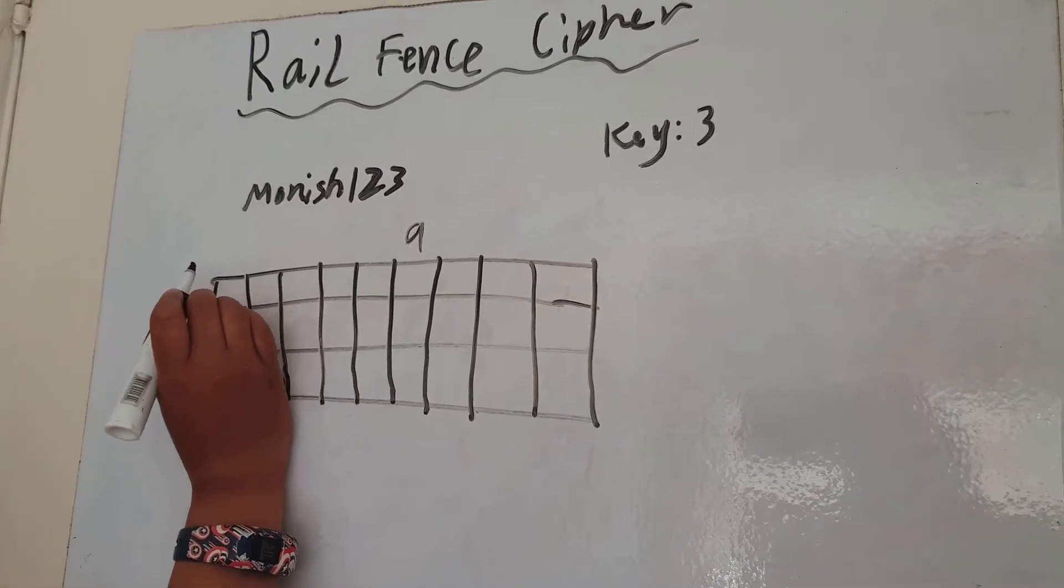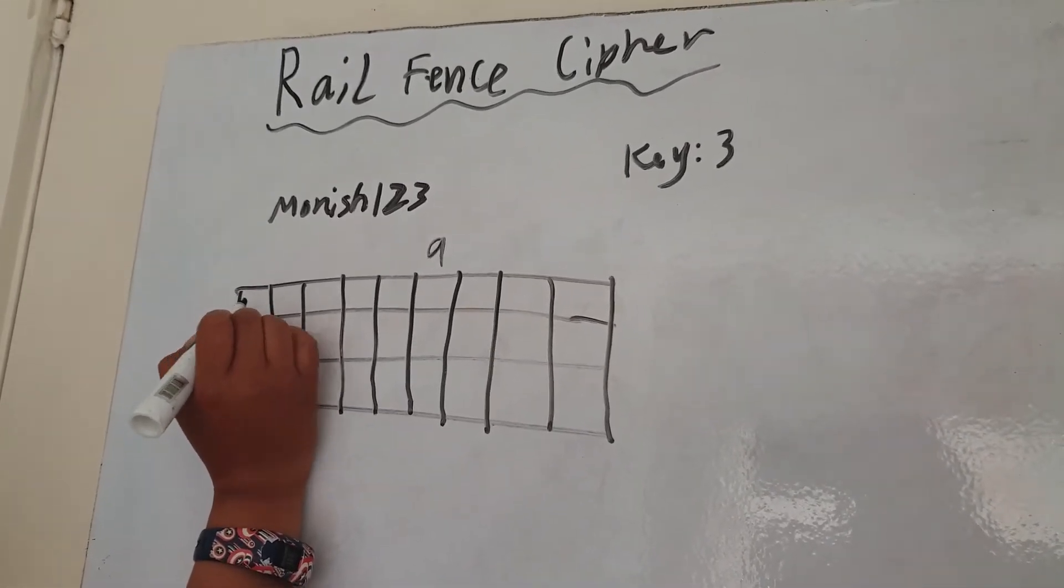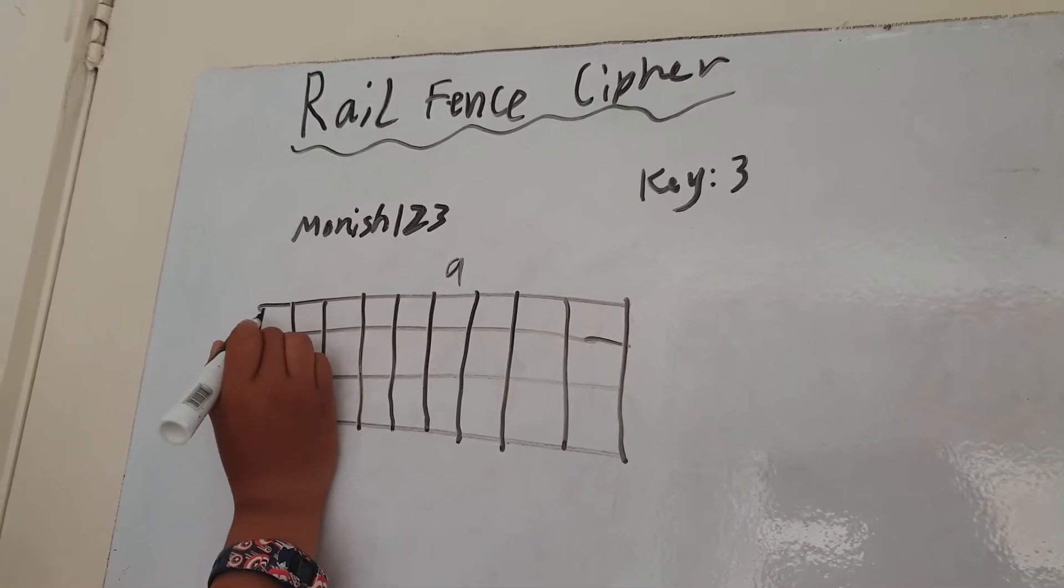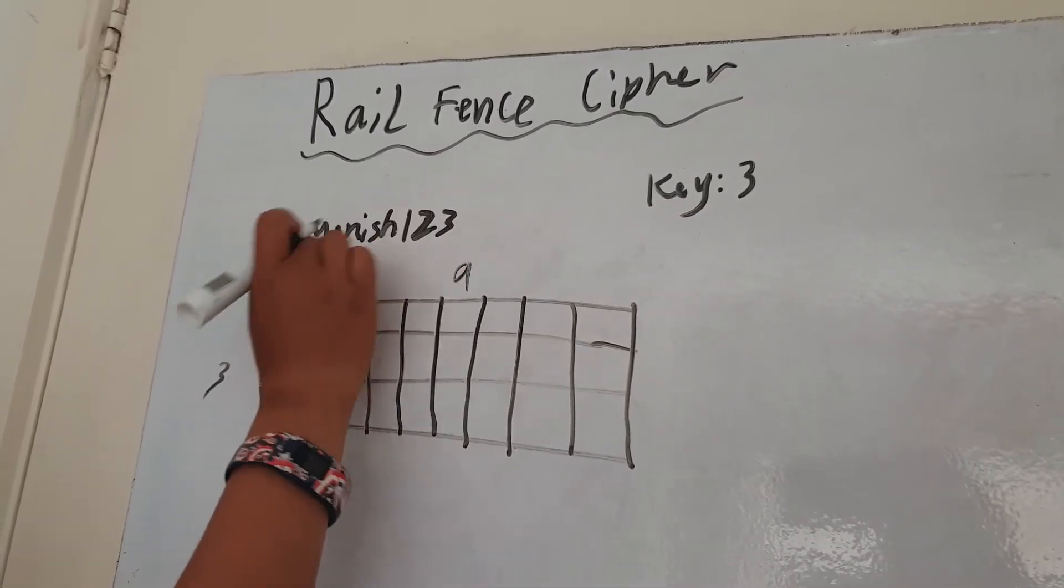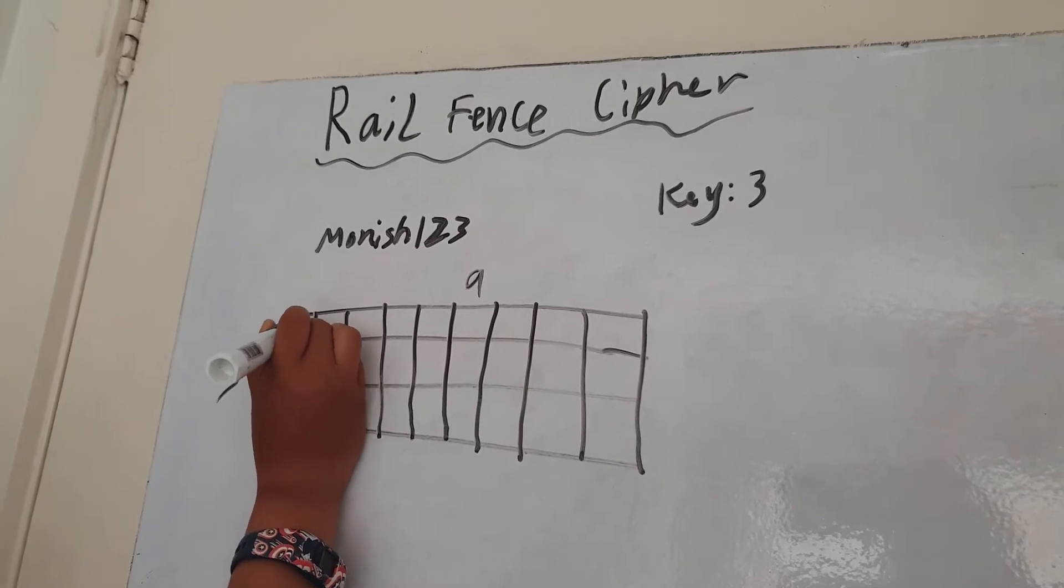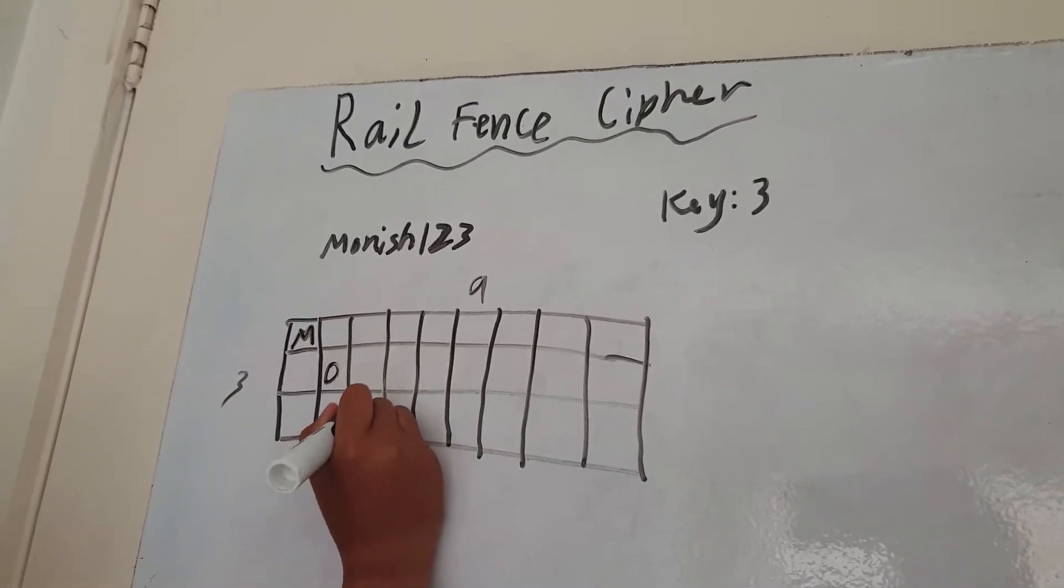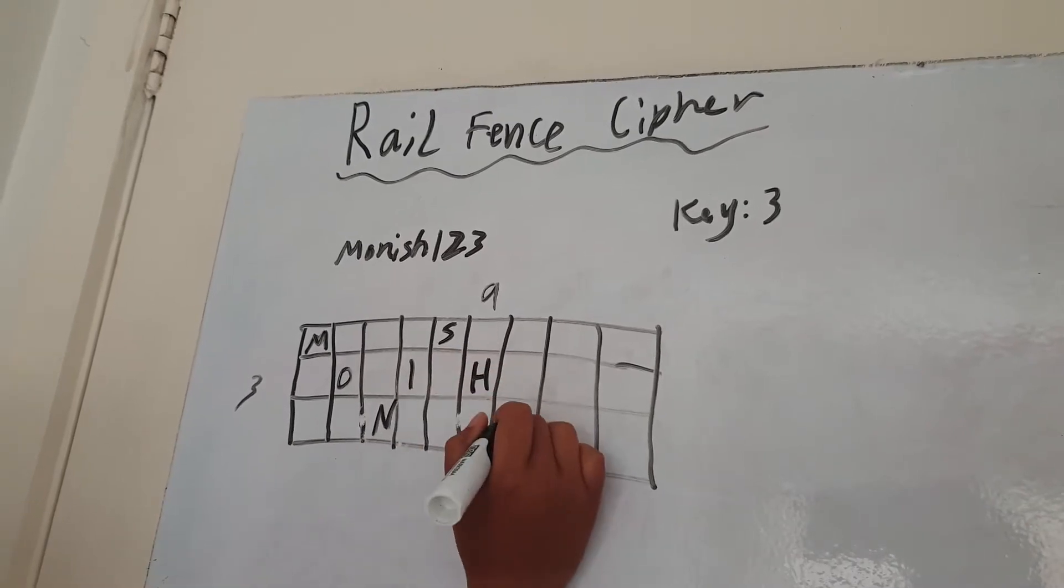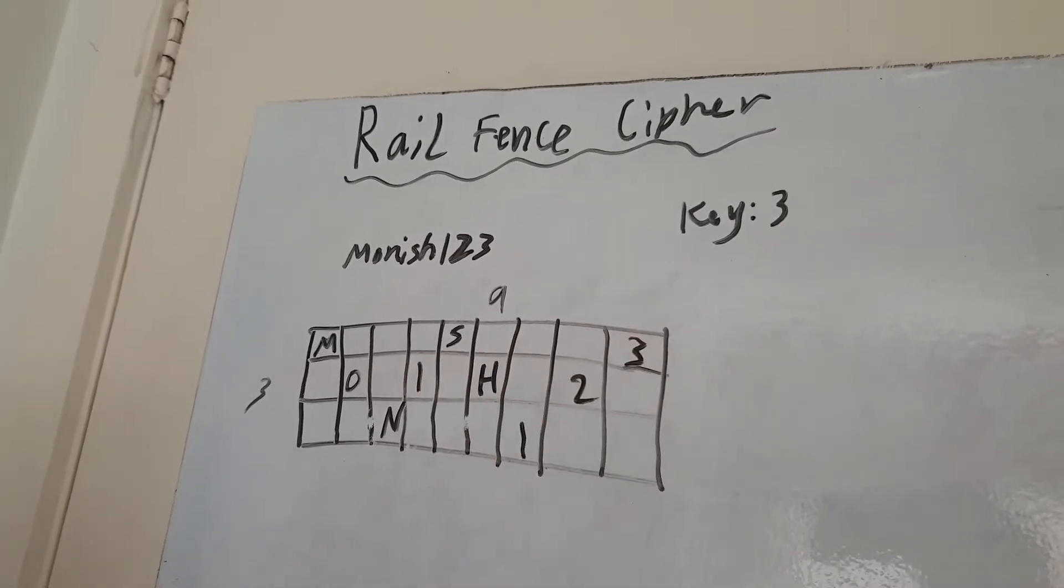So now that you've gotten that, you have to start at the top right box and you have to go diagonally downwards. And you have to write each letter of the message in the box. So you write M, and you write O, then N, I, S, H, one, two, three. Like that.